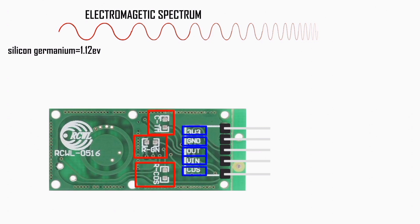The RCWL-0516 microwave radar proximity sensor pinout includes: 3V3, which is the output from the voltage regulator, not the power pin; VIN, the power input pin, which accepts 4 to 28 volts; GND, the ground pin; OUT, the output pin, which goes high when the sensor detects movement and remains low otherwise; and CDS, used to connect a light-dependent resistor to disable the sensor in bright light conditions.